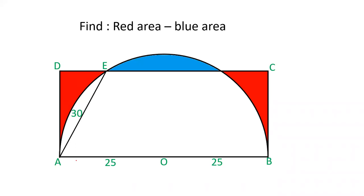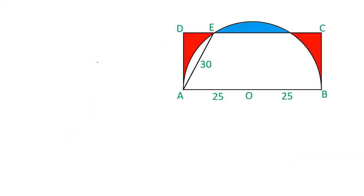The semicircle cuts the rectangle at two points E and F. We have to find out this difference. Let us see how we can solve this question. First of all join BE and draw perpendicular from E. This is perpendicular. Now let's name this perpendicular M.